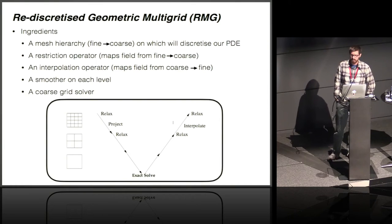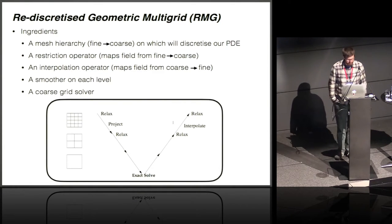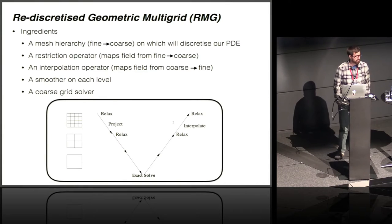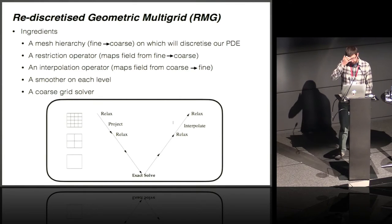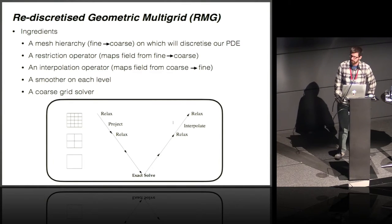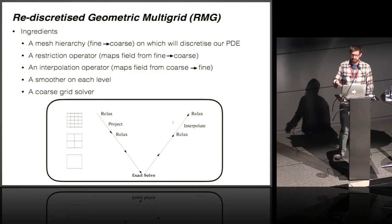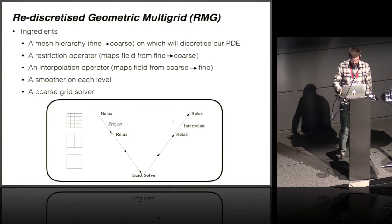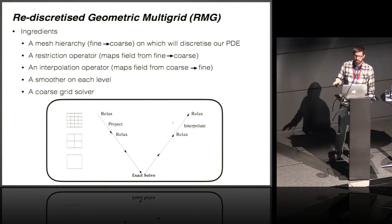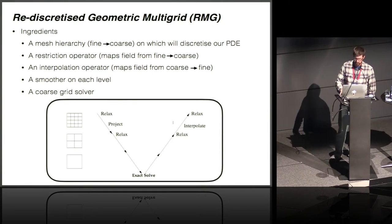The ingredients algorithmically — and as far as software is concerned — include some sort of mesh hierarchy to describe the geometry and topology of the problem, a set of maps between elements of the hierarchy such as restriction and interpolation operators, some operators acting as smoothers (things like SOR or Richardson iterations), and a coarse grid solver, which is generally thought of as an exact solver but could be a sufficiently accurate iterative solver as well.